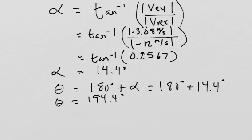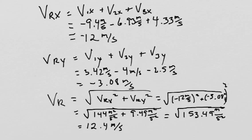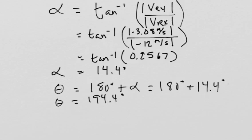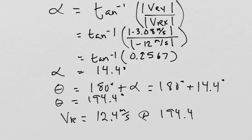And basically, our final answer is to that question, where is Beatrice in relation to her starting point? Well, Beatrice is now 12.4 meters per second. So VR is going to be equal to 12.4 meters per second, that's the magnitude of her velocity, at a direction of 194.4 degrees.